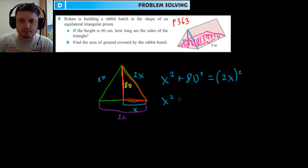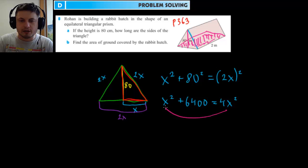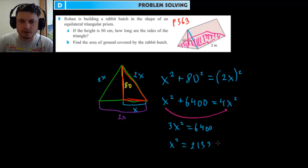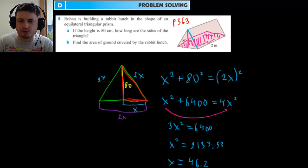This gives us x² + 6,400 = 4x². Moving x² to the other side gives us 3x² = 6,400, which means x² ≈ 2,133.33. Therefore x equals the square root of that, which is approximately 46.2. This is the length x.